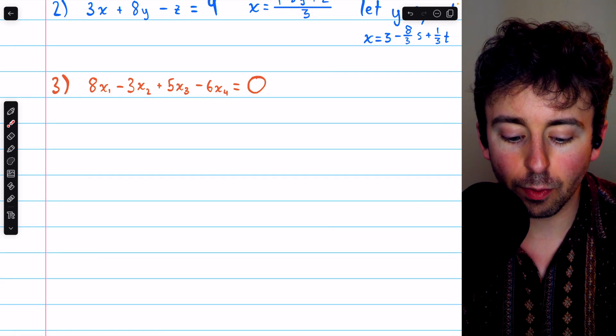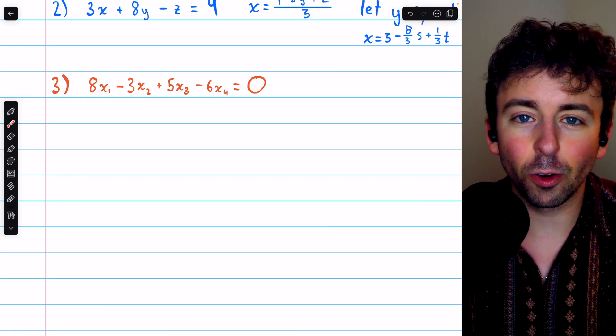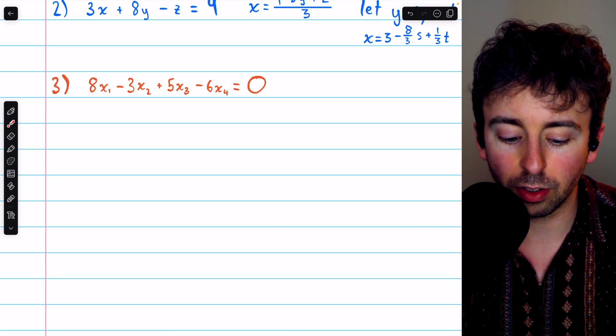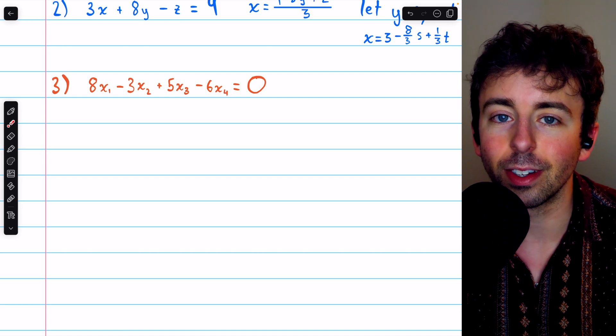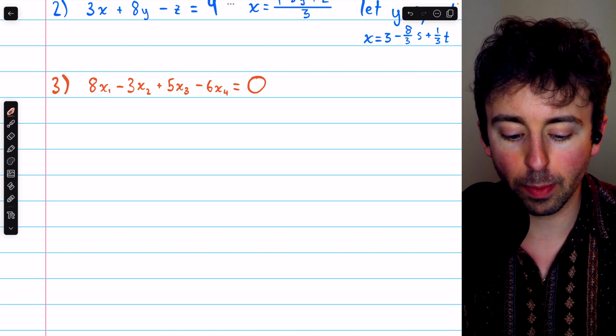In this last example, we have 4 variables, so we'll end up with 3 parameters. It's at around this point, with 4 variables or more, where we often choose to start using subscripts rather than different letters. So x1, x2, x3, and x4 are our 4 variables.